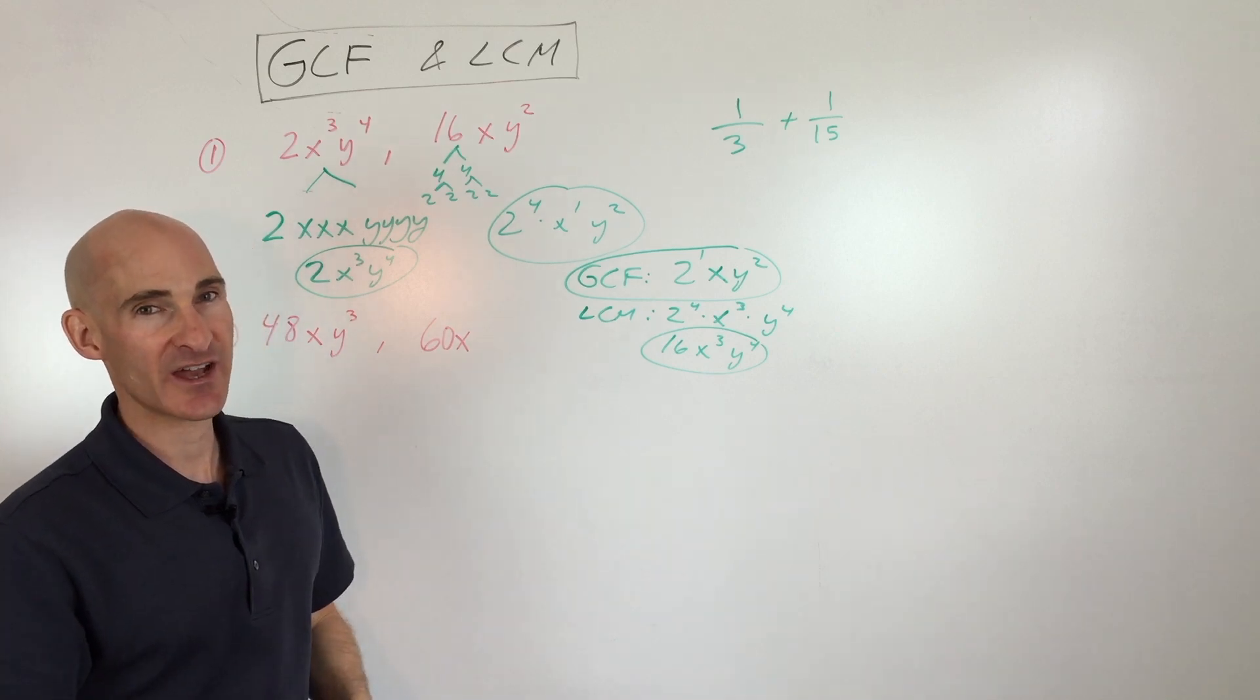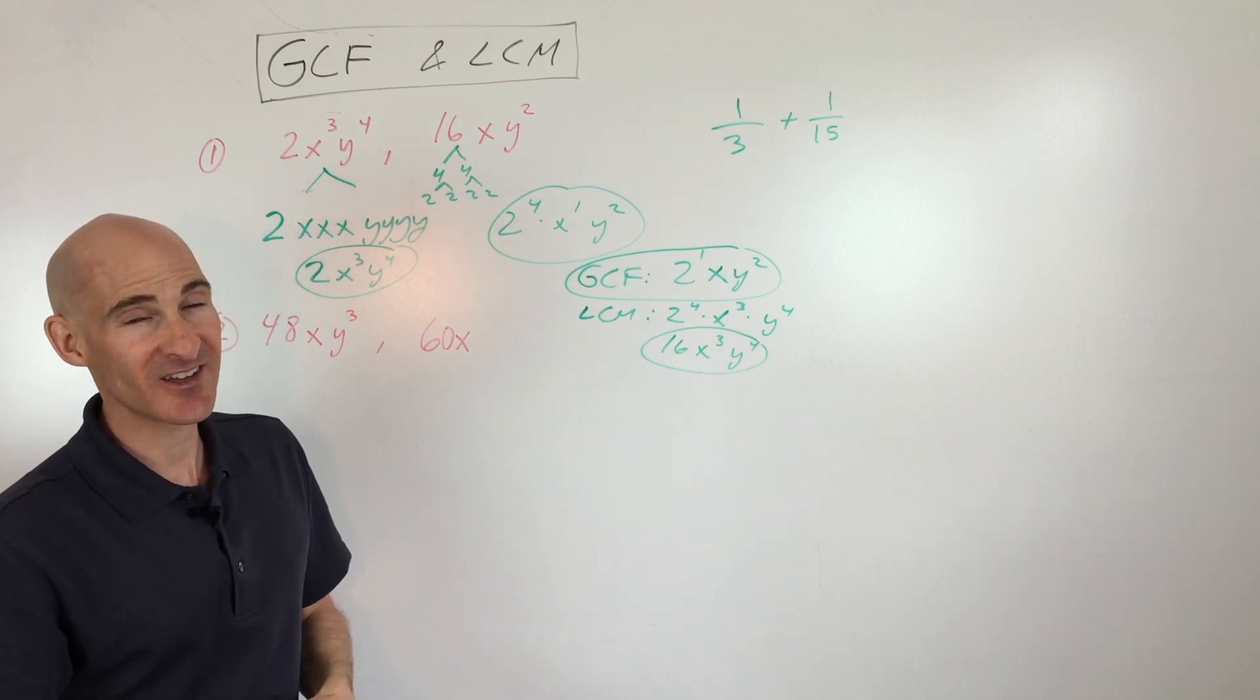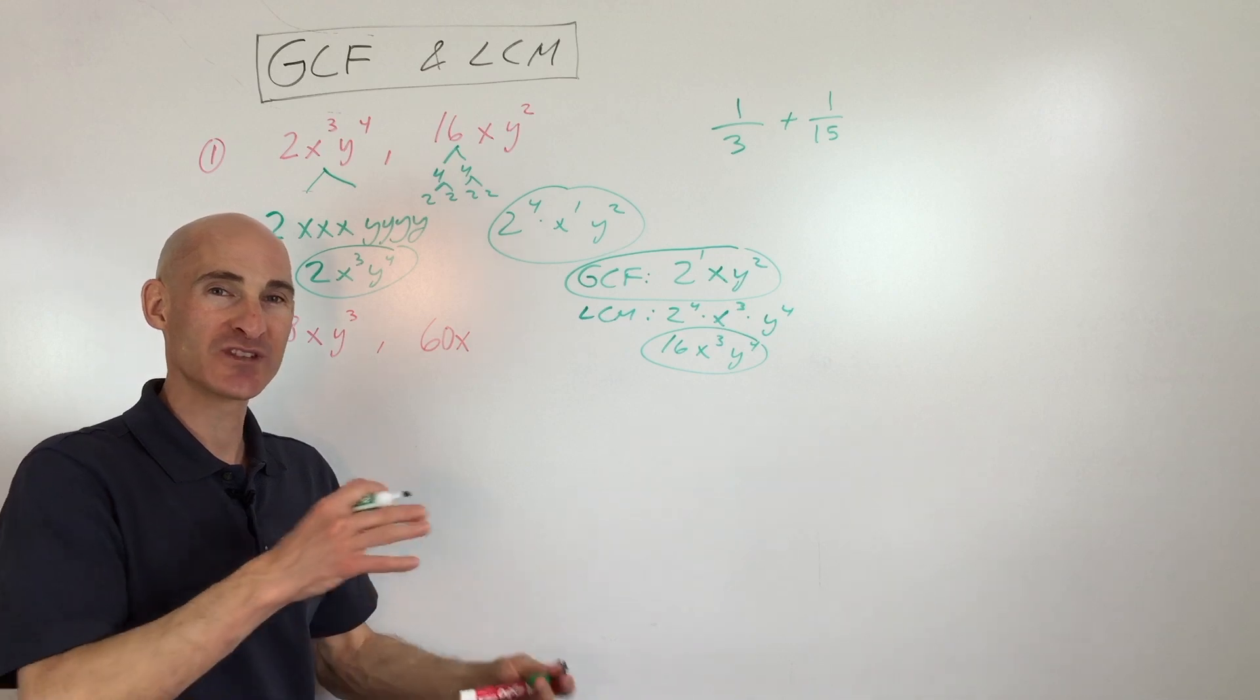So just think about the opposite. Greatest common factor, actually take whatever occurs less. And the least common multiple, take whatever occurs most.